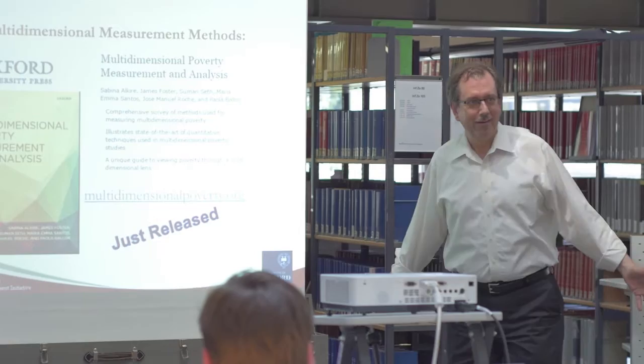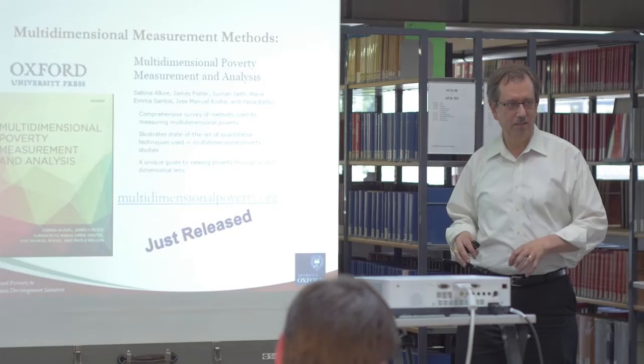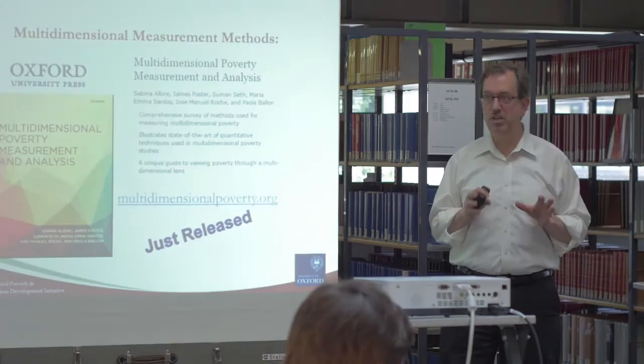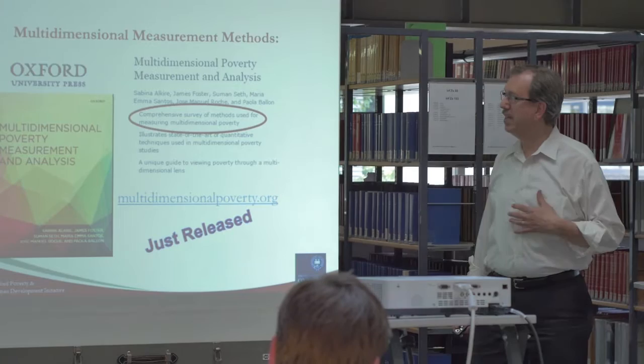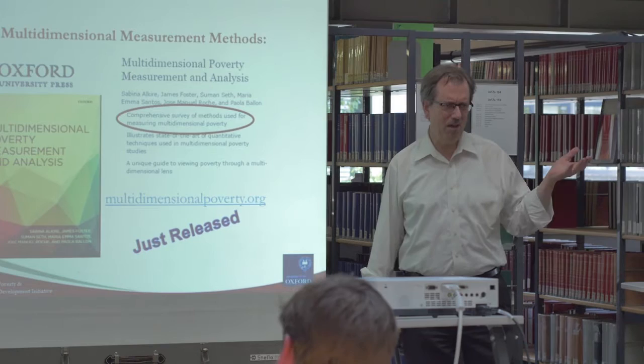This is a new book, just released. We're going to talk about the subject matter of the book in the context of the book itself. So it'll be two things: talking about the book, but also the real ideas that lie with it. What is this book? A comprehensive survey of methods used for measuring multidimensional poverty.